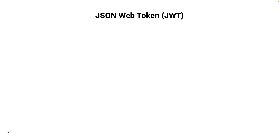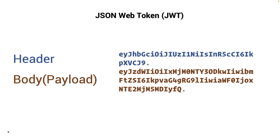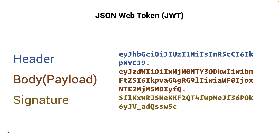An ID token is always a JSON Web Token — or JWT. The ID token has three parts: first, the header — something like a base64 string ending with a dot; then the body or payload — again a base64 string with a dot; and finally the signature. So a JWT has two dots and three parts.